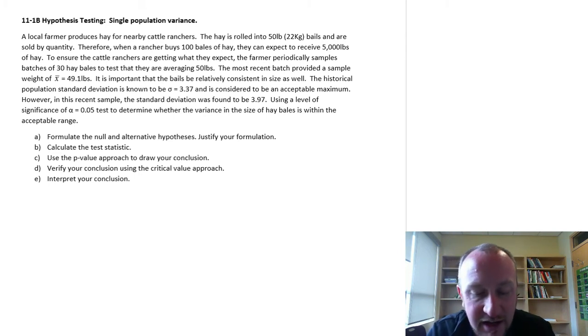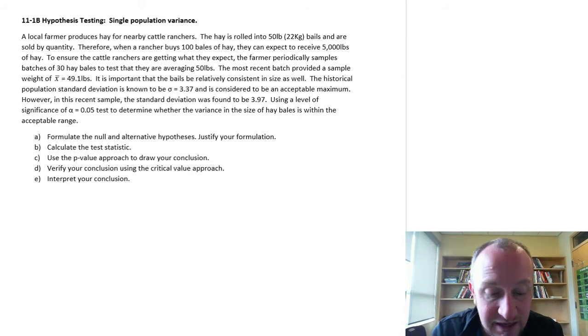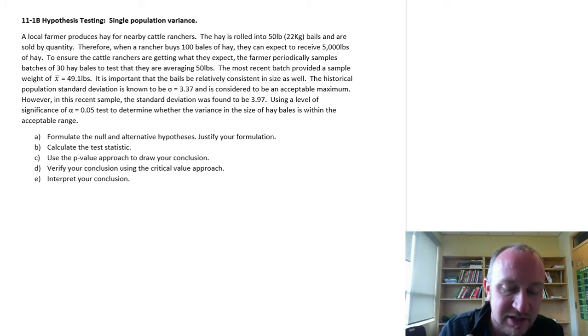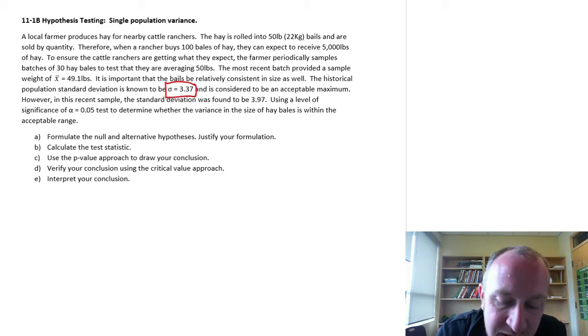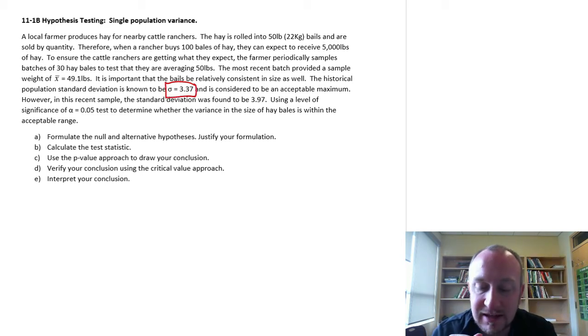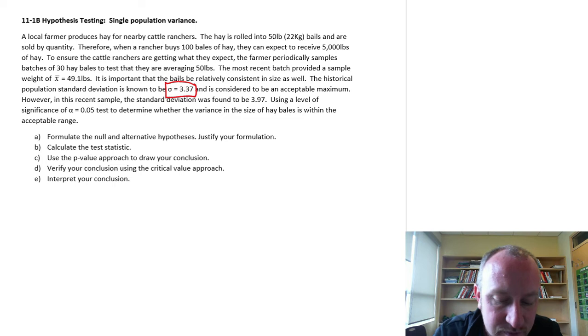To ensure the cattle ranchers are getting what they expect, the farmer periodically samples 30 hay bales to test that they're averaging 50 pounds. The most recent batch provided a sample weight of 49.1 pounds. It is important that the bales be relatively consistent as well. However, these are functions of each other. We're actually going to be testing the variance.